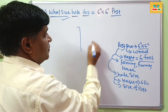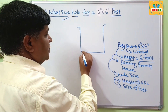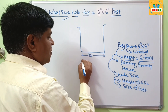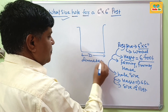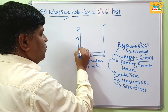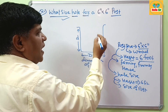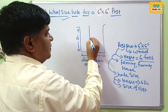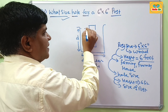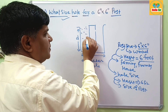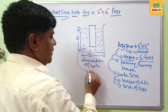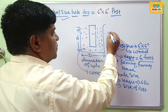Suppose you dig out the soil — this is the hole. D is the diameter of the hole, and this is the depth of the hole. You place the post inside the hole, and the remaining space around the post is filled with concrete.